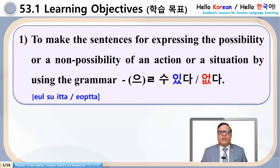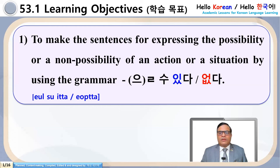The learning objectives are: to make sentences expressing the possibility or non-possibility of an action or situation by using the grammar Ulsu Itta or Ulsu Akta. Are the learning objectives clear?